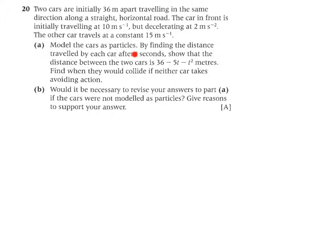Now we have to model the cars as particles. By finding the distance traveled by each car after t seconds, we have to show that the distance between the two cars is 36 minus 5t minus t squared meters. Find when they would collide if neither car takes avoiding action.